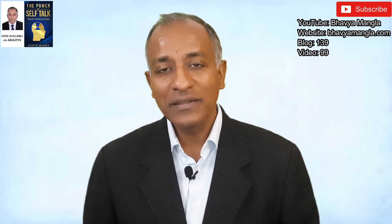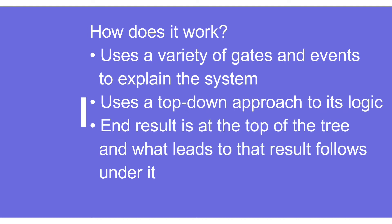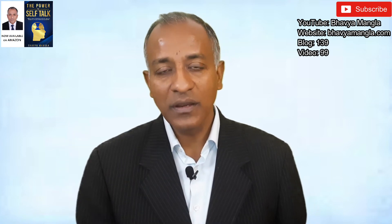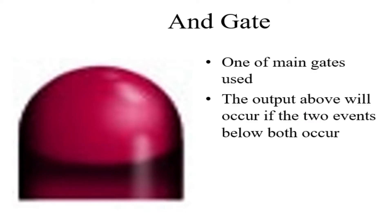The next step is: how does FTA work? There are three possible ways. First, it uses a variety of gates and events to explain the system. Second, it uses a top-down approach in its logic, where the end result is at the top of the tree, and that leads down to the possible causes. And there are different terminologies being used, one of the most popular being the AND gate, which has a specific symbol.